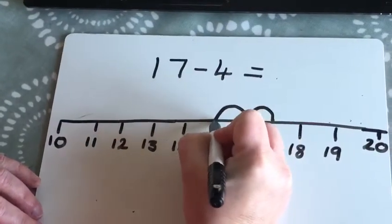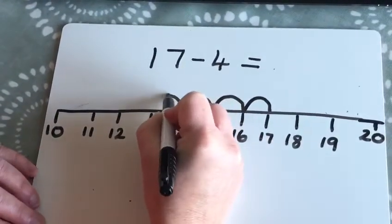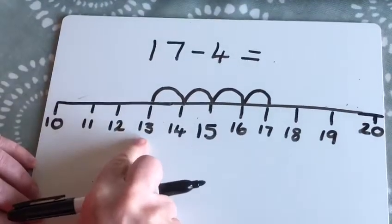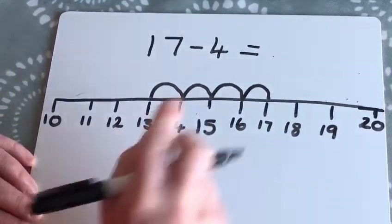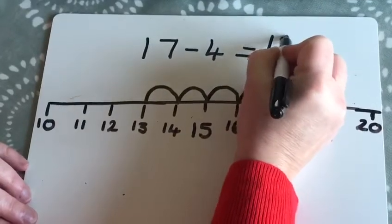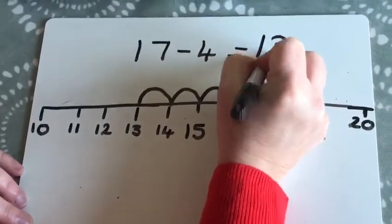1, 2, 3, 4, and we've ended up at 13. So 17, take away 4, makes 13.